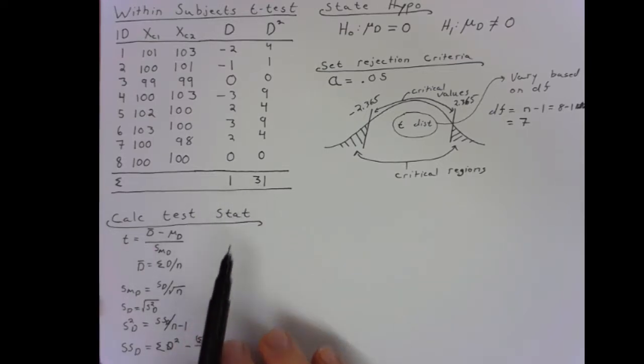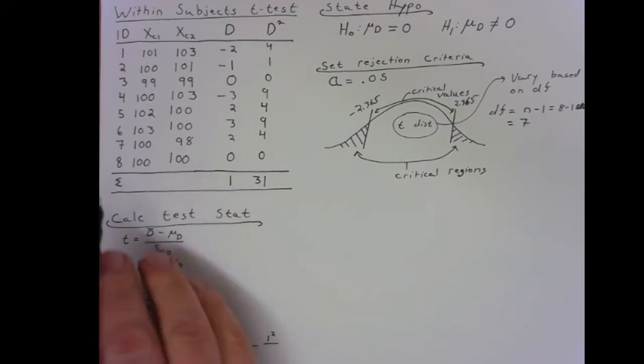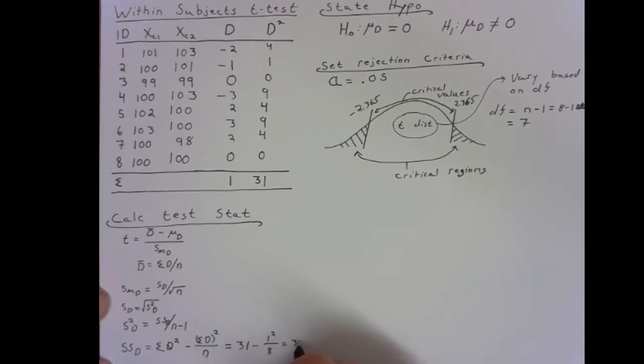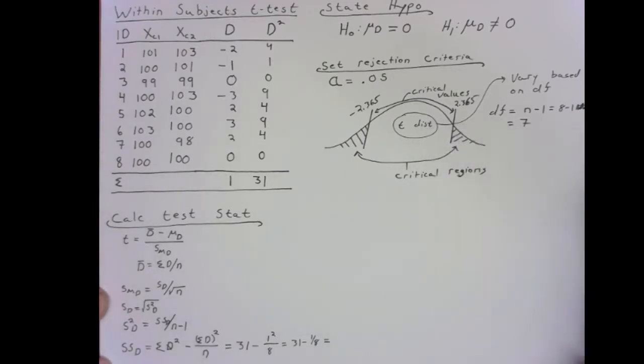Now that we have these two numbers, we can jump back down in here at the bottom of our list of formulas. Sigma d squared is 31, minus sigma d, 1 squared, divided by n, which is 8. So, 31 minus 1 squared is 1, so minus 1 eighth. 31, I'm going to cheat and make this all decimal. 1 divided by 8 gets us 0.125. So, 31 minus 0.125 gets us 30.875.